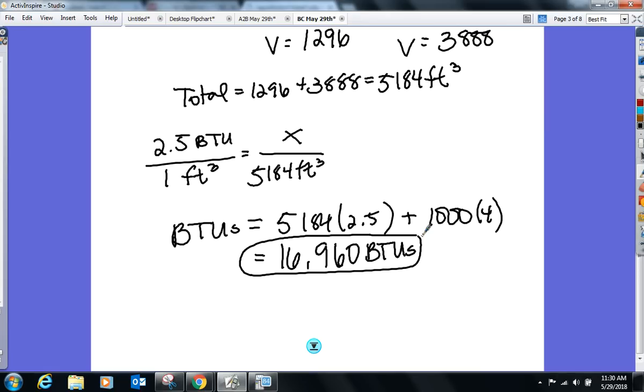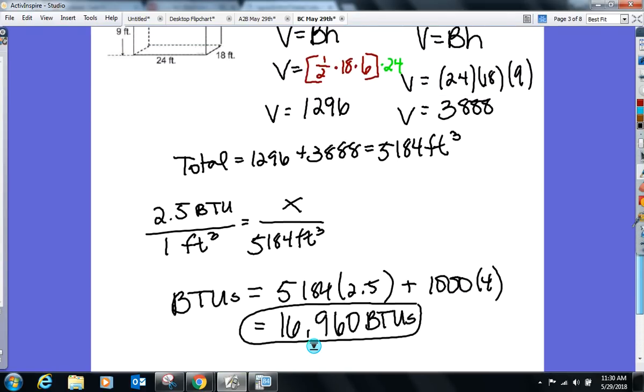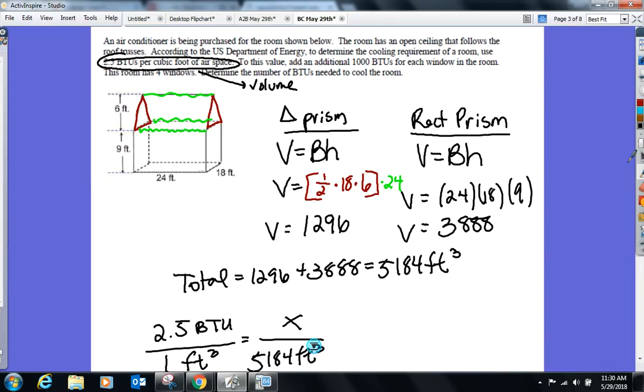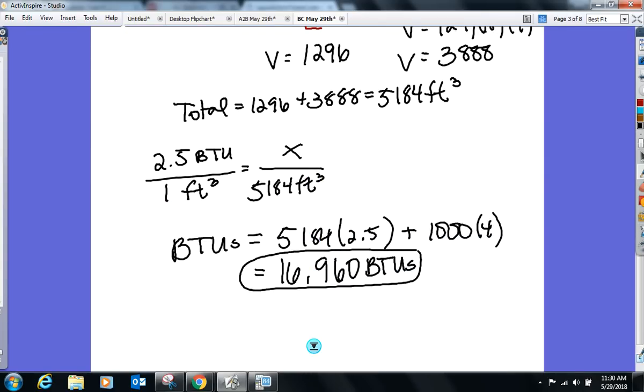Because the 4000 is BTUs, it's not square feet. It's 1000 BTUs, not square feet, so I wouldn't add it to this number. That's why I waited to the end when I was calculating the BTUs. Anything else? All right, we got one more here.